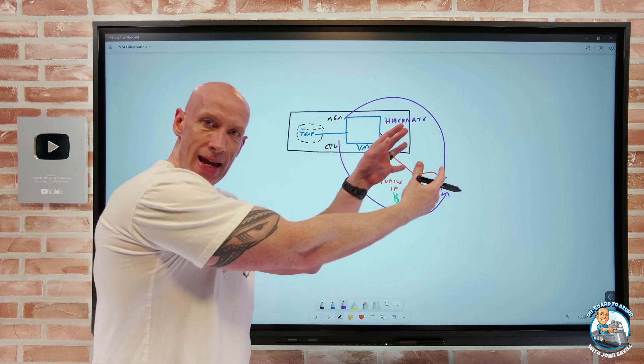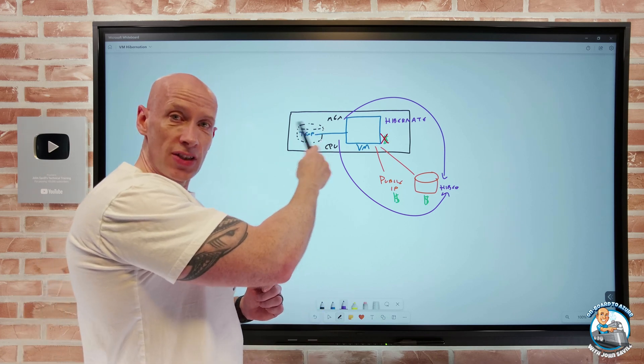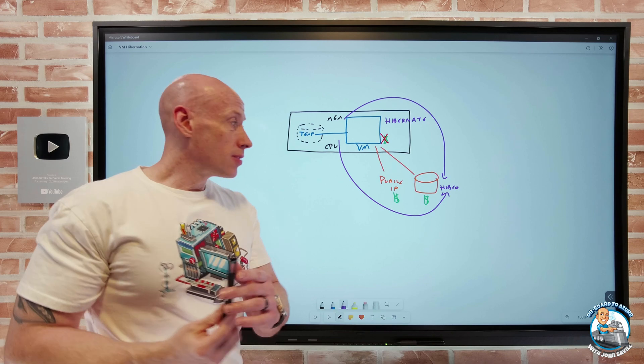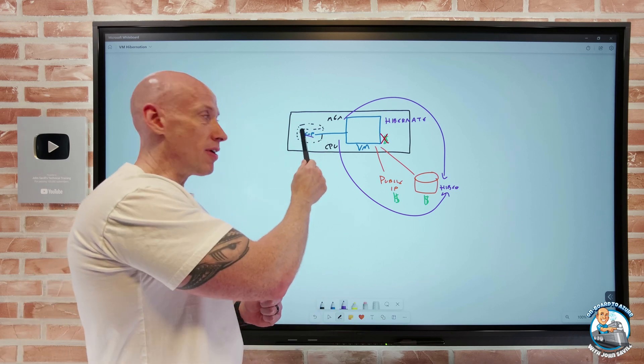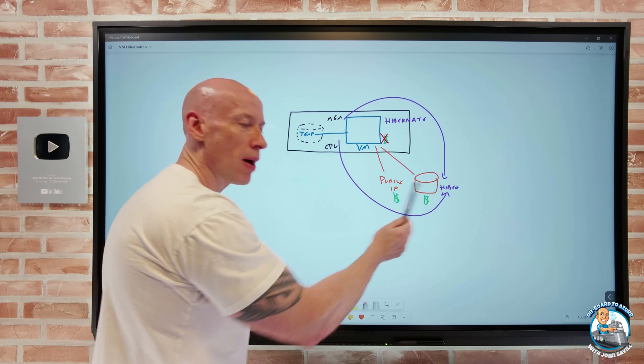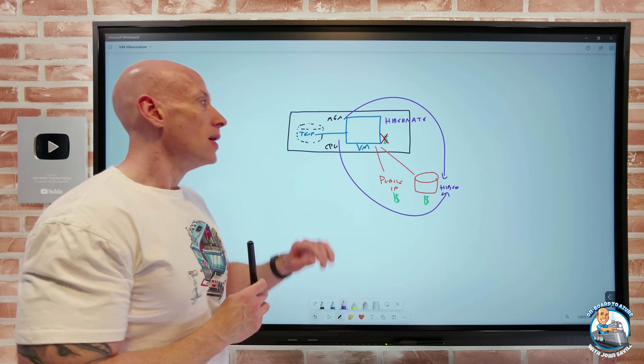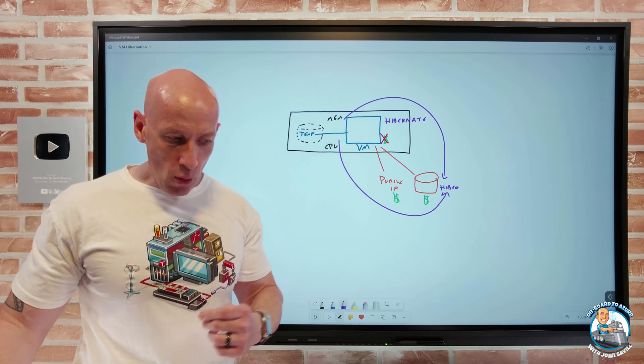And we'll talk towards the end about some scenarios where this is really useful. But now I have the capability of not losing the state, but still stop paying for the compute charge. Because again, it is getting removed from the node. Now, again, I'm still going to lose the content if I do have a temp drive. For Windows, I can't store the page file on there anymore. Because, hey, it's going to go away. I'd need to move my page file to, for example, the C drive, the OS disk. But now I can resume from that point.